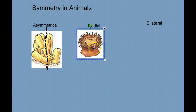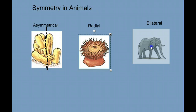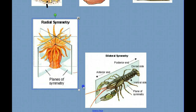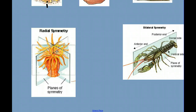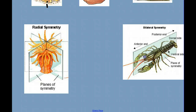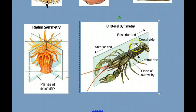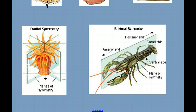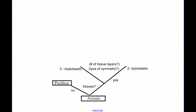A sea anemone, for example, has radial symmetry, and an elephant has bilateral symmetry. An animal that's radially symmetrical can be divided into mirrored halves by making any vertical plane as long as it passes through the central axis. A bilateral animal is two-sided, and there's one plane in which you can divide it into two mirrored halves. The animals that are diploblastic, or have two germ layers, are also radially symmetrical. And the animals that are triploblastic, having three germ layers, are bilateral — with one exception.